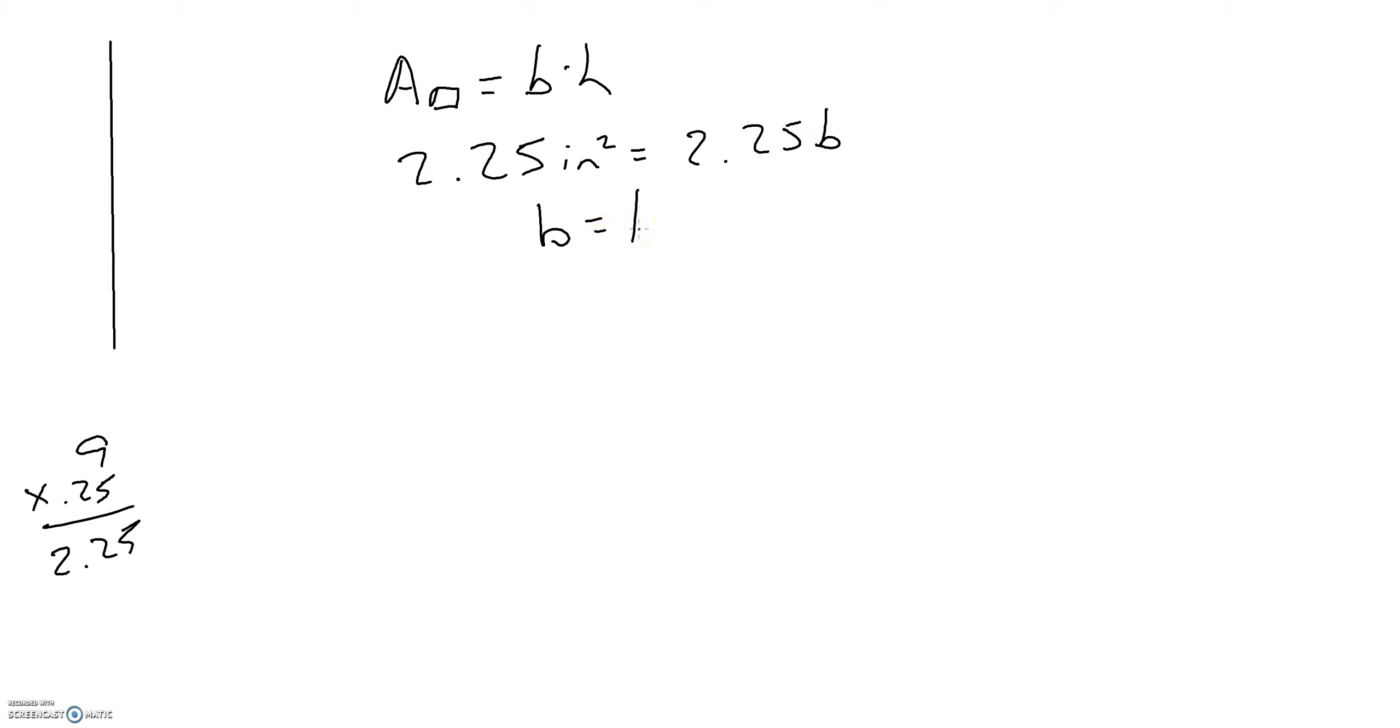Don't forget, it said our grid spacing is 0.25. So 1 divided by 0.25, there are 4 quarters in a dollar, and you go out 4 spaces.